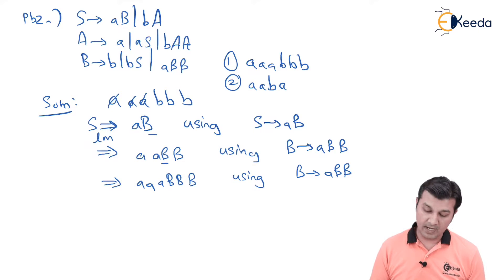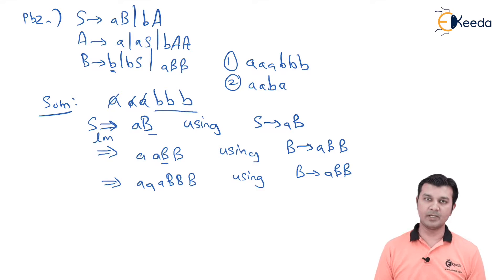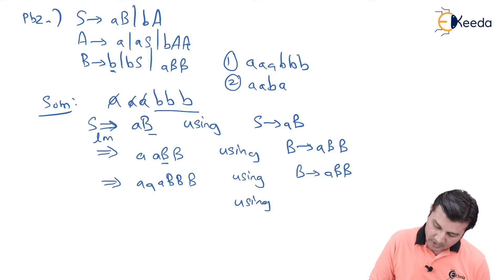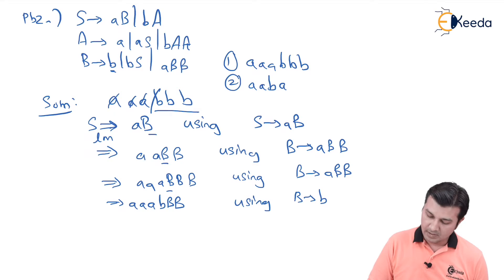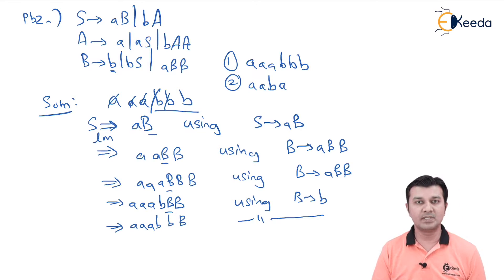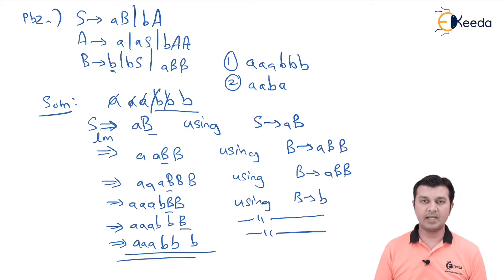Since my three A's are derived and I have to derive three B's, each one of the B's will be replaced by small b. Using B gives small b for the leftmost B, I get AAA small b capital B capital B. Again using the same production, the next capital B gives small b, and finally the last B is replaced by small b, giving me three A's and three B's. The string triple-A triple-B is derived using LMD.